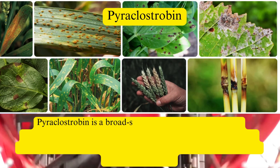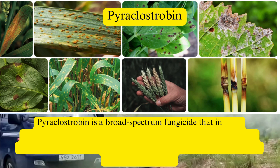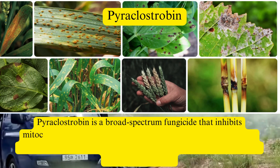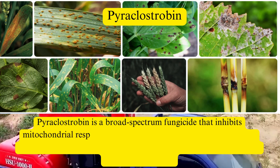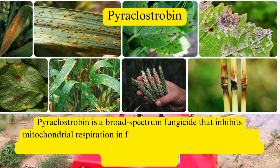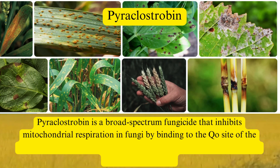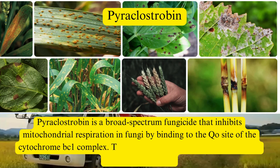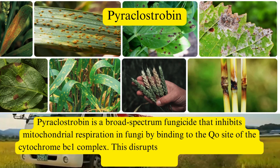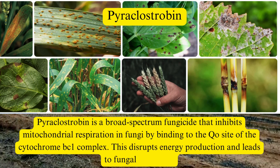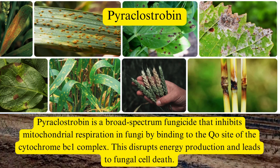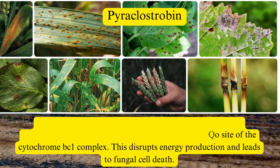Mode of action. Pyroclostrobin is a broad-spectrum fungicide that inhibits mitochondrial respiration in fungi by binding to the QO site of the cytochrome BC1 complex. This disrupts energy production and leads to fungal cell death.